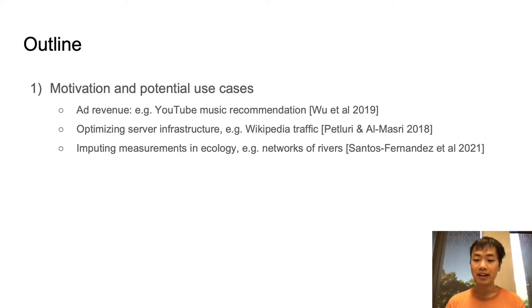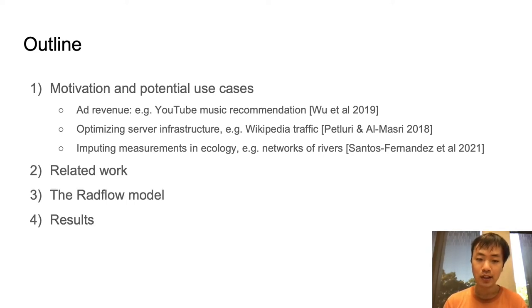Networks of time series also occur naturally in the wild. If we have networks of rivers and streams, how can we use the topology of the network to impute missing values of sensor measurements? So those are the motivations for why we should care about networks of time series. Now I will go through the existing literature, then introduce the RADflow model, describe the results, and finally end with a demo.